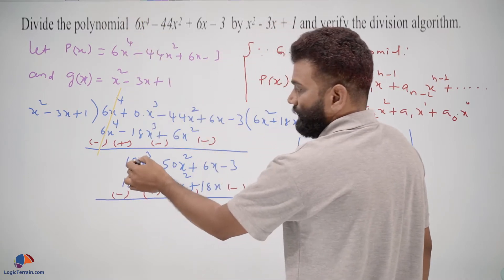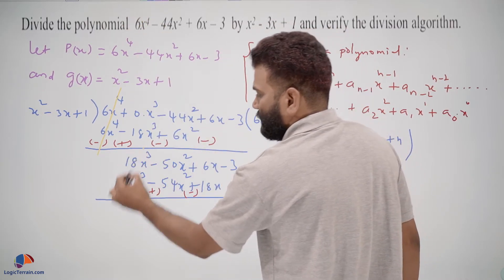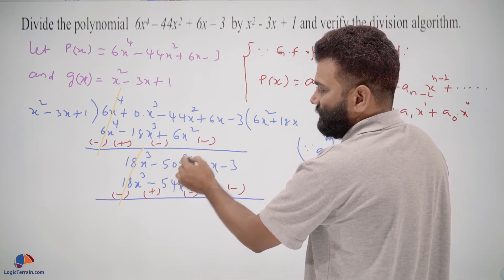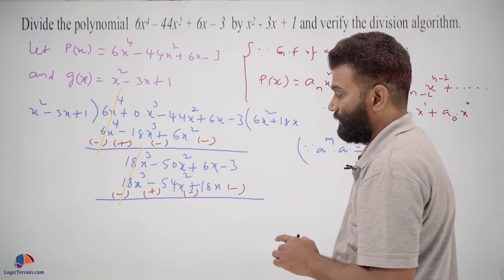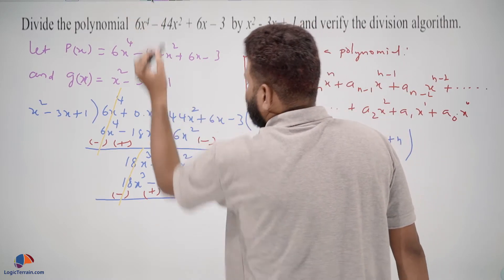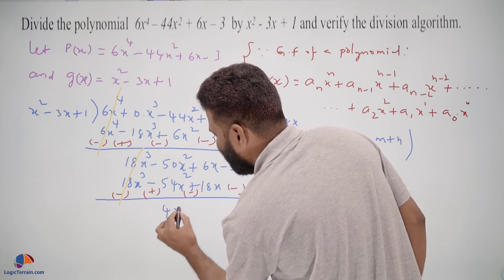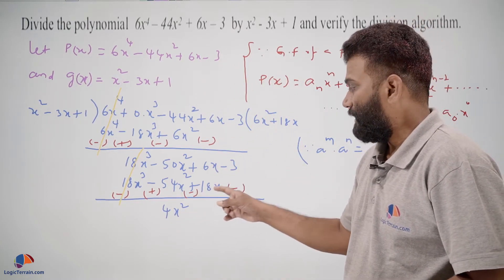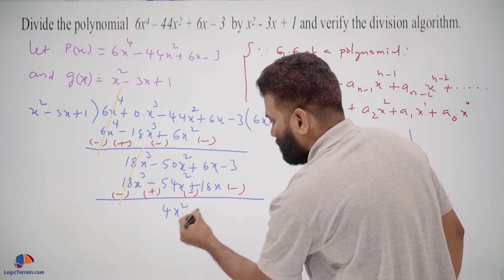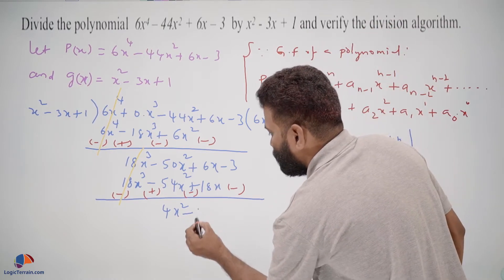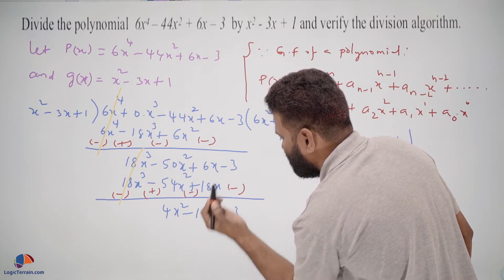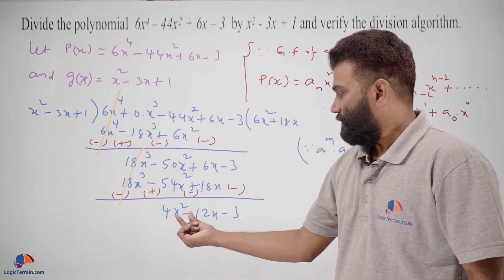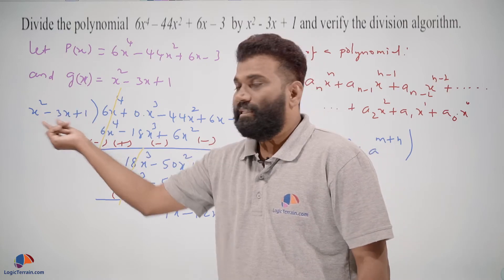We subtract again, so signs change. 18x cube minus 18x cube cancels. We are left with minus 50x square plus 54x square giving plus 4x square, plus 6x minus 18x giving minus 12x, minus 3.